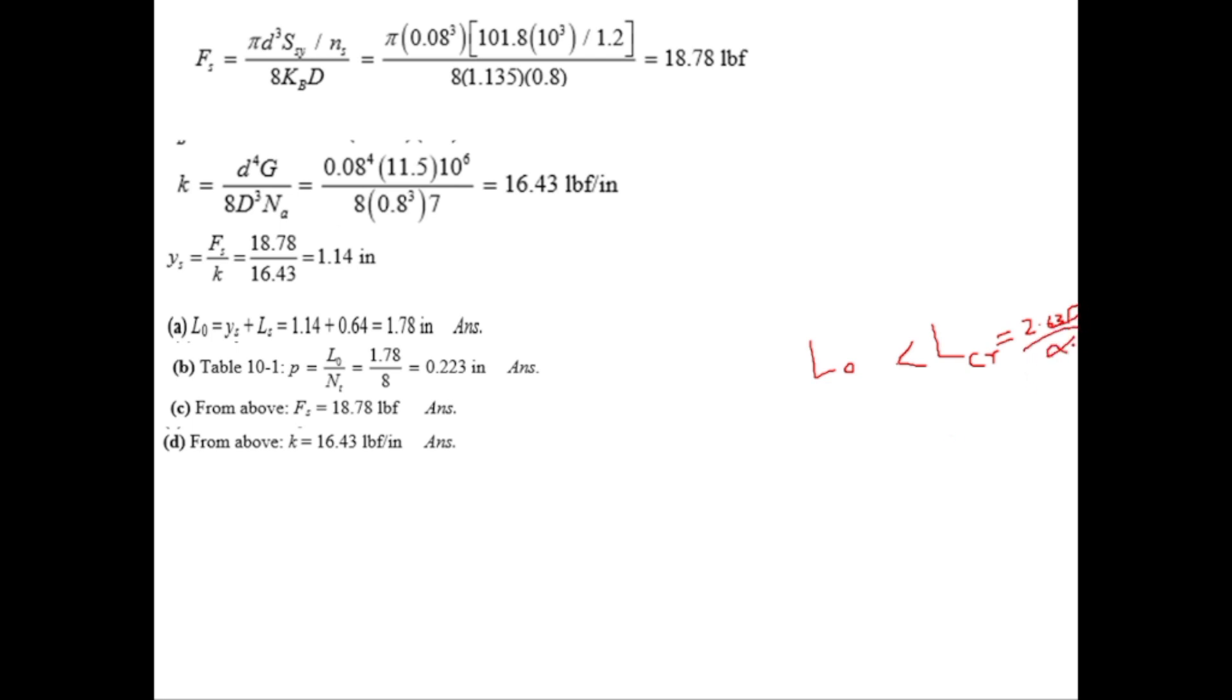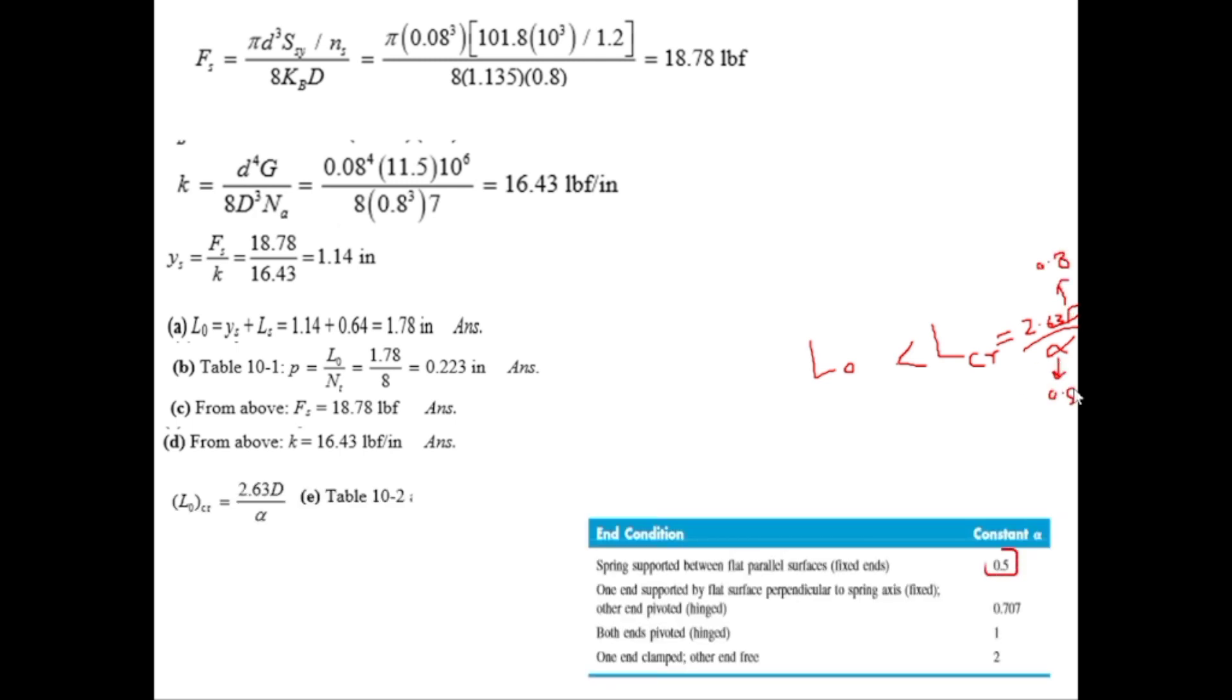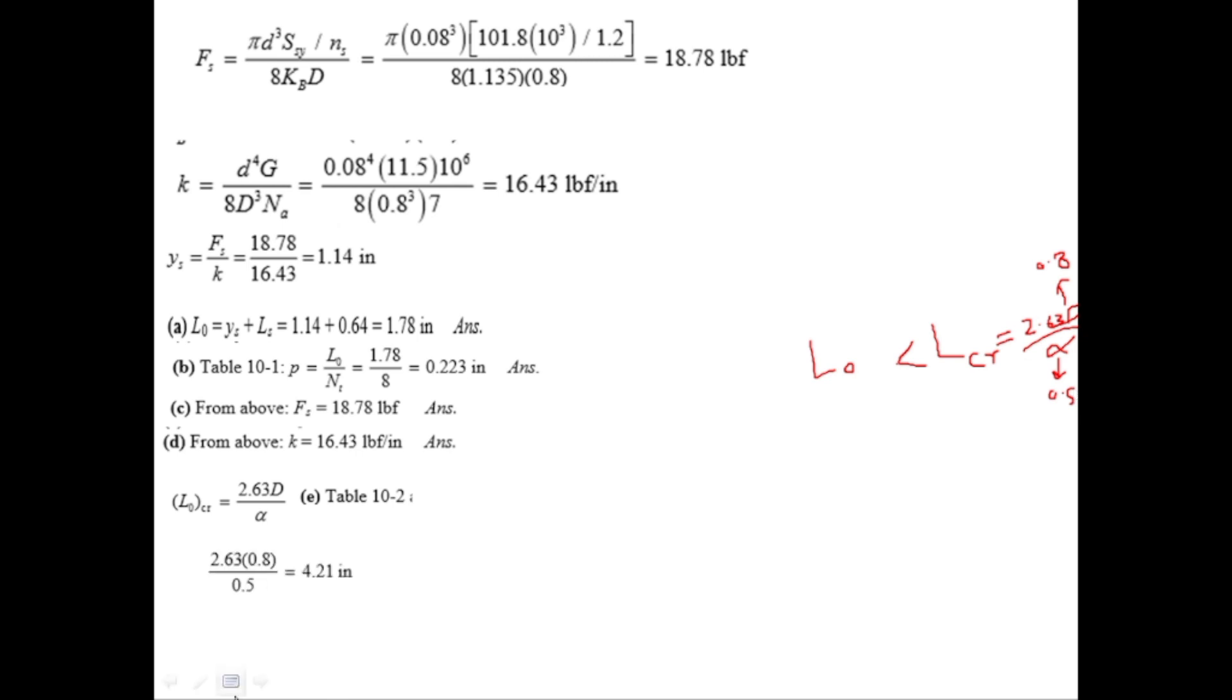Alpha value can be taken from table 10.2. When the spring is supported between two parallel flat plates, alpha is 0.5. With D as 0.8, L critical equals 2.63 times 0.8 divided by 0.5, giving 4.21 inches. This value is greater than L0 which was 1.78, so buckling will not occur.